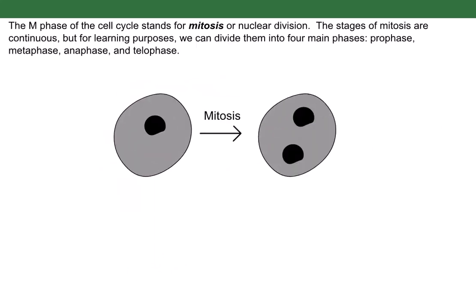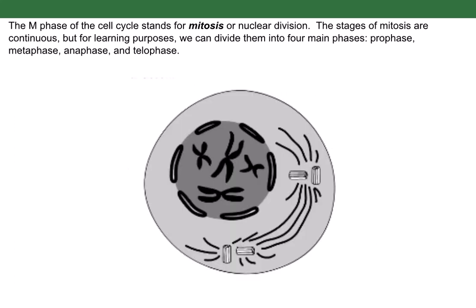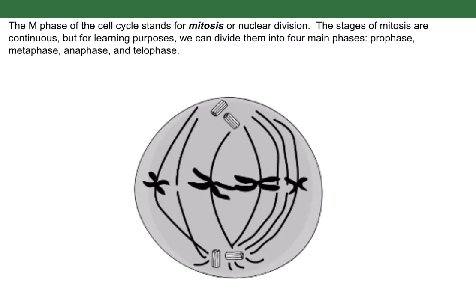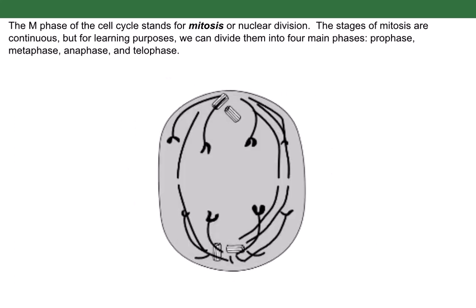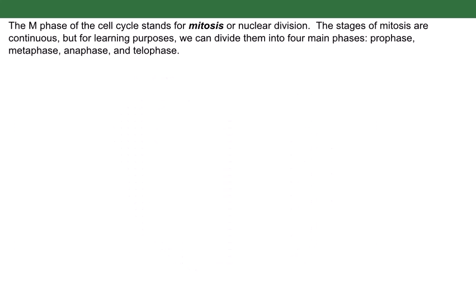The M phase of the cell cycle stands for mitosis, or nuclear division. The stages of mitosis are continuous, but for learning purposes we can divide them into four main phases: prophase, metaphase, anaphase, and telophase.